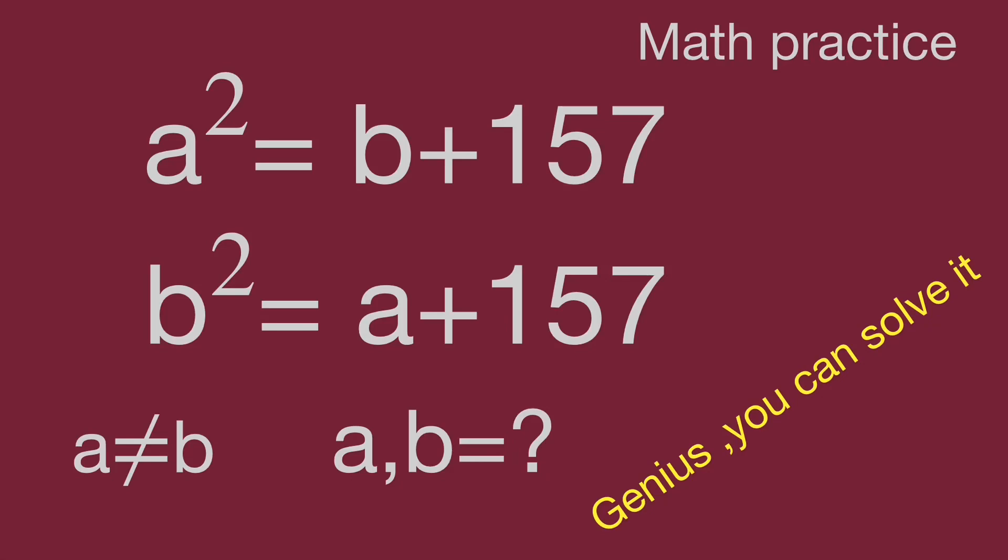a squared equal to b plus 157, b squared equal to a plus 157, and a not equal to b. Find the value for a and b.